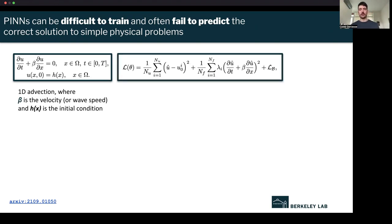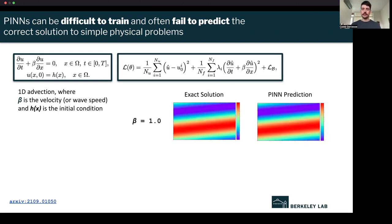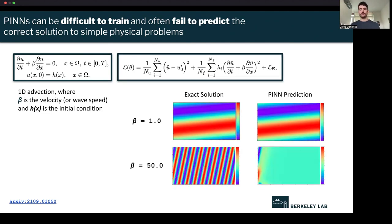As I said before, we can incorporate this into the loss function by adding this term that we would like to be minimized. In some cases, the neural network can do a very good job of predicting the exact solution. But as I mentioned, in other cases, we found as this beta parameter or as this wave speed is increased, the PINN can actually fail to predict the correct output solution.